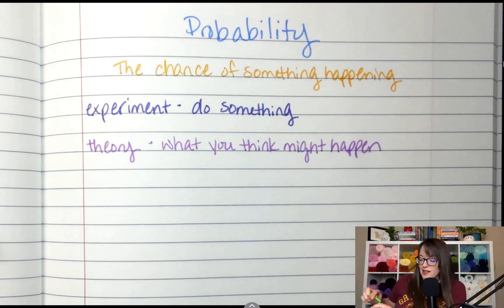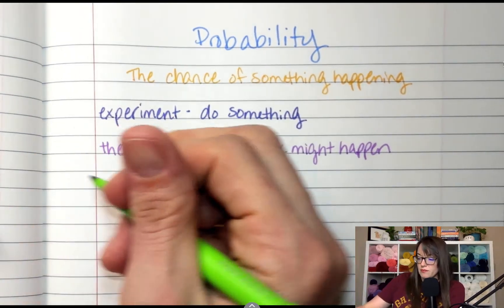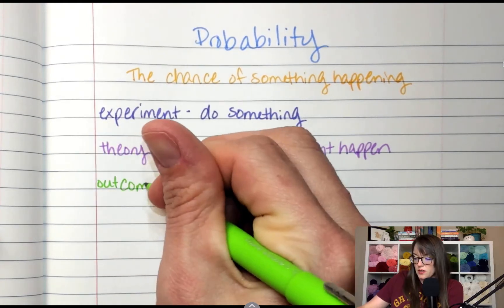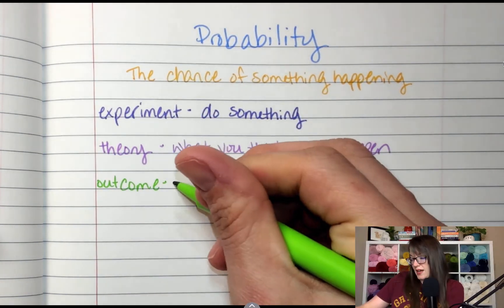And in that reality, whatever did happen, we call an outcome. Outcome is what actually happened.